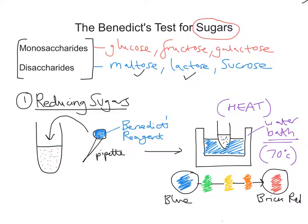You can use this method to compare the amount of reducing sugar in different solutions by eye, but a more accurate, quantitative approach would be to filter the solution and weigh the precipitate. If one solution produces a greater weight of precipitate than another, you can conclude it contains more reducing sugar. Overall, the colour spectrum runs from blue all the way to brick red, with green, yellow, and orange in between. That is the test for a reducing sugar.